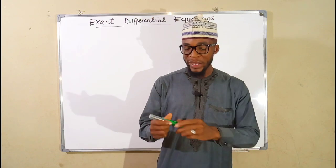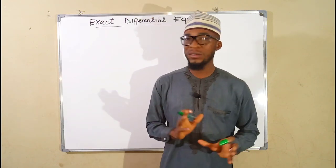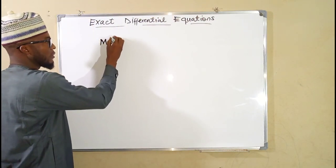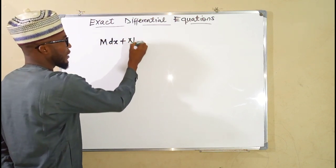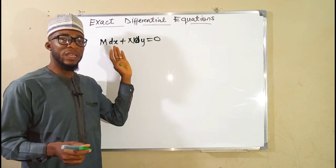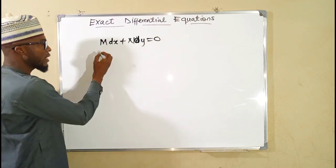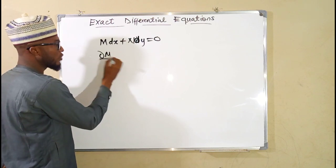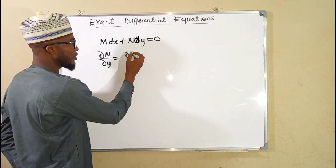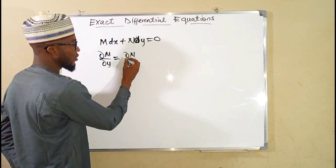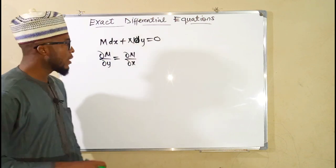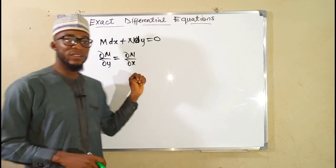The general form of an exact differential equation is M dx plus N dy equals zero. This is the general form where the partial derivative of M with respect to y is equal to the partial derivative of N with respect to x. If this condition holds, then we say this is an exact differential equation.